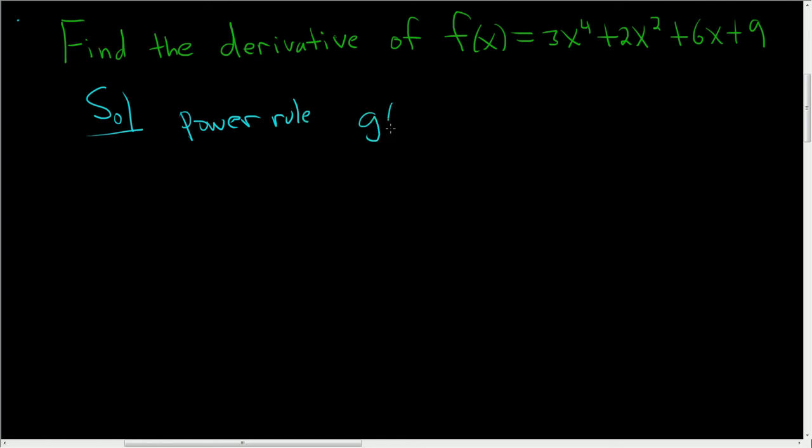It basically says if you have g(x) = x^n, then the derivative g'(x), to find it you take the n, bring it down, and then you have x^(n-1). So in our problem,